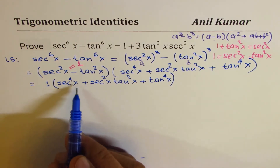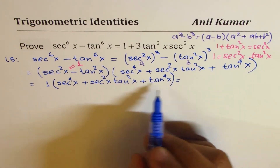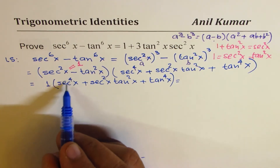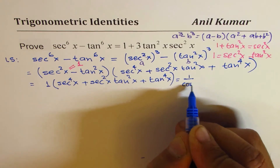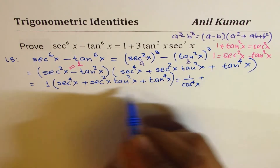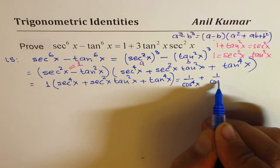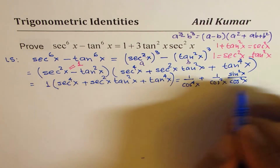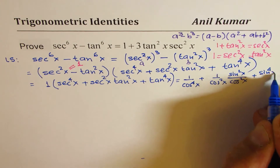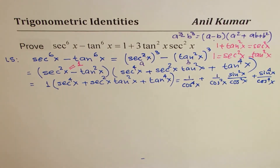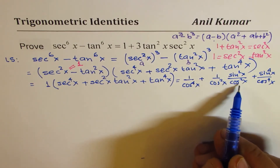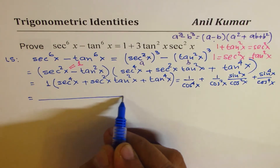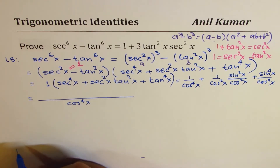1 times anything is that expression itself. At this stage, I'll rewrite all these terms in sine and cosine. Secant to the power of 4 is 1 over cos to the power of 4x, then 1 over cos squared x times sine squared x over cos squared x, plus sine to the power of 4 over cos to the power of 4. The common denominator is cos to the power of 4x.